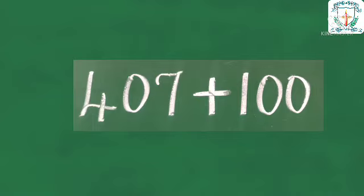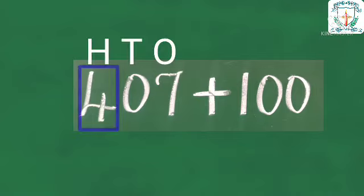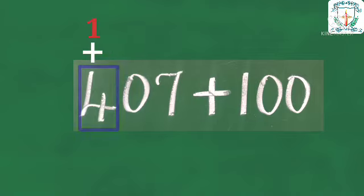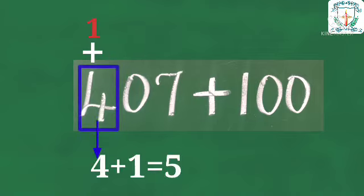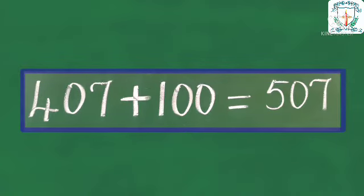407 plus 100. Here the digit 4 is in hundreds place. Let us increase 4 by 1. That is 4 plus 1 is equal to 5. Therefore, 407 plus 100 is equal to 507.